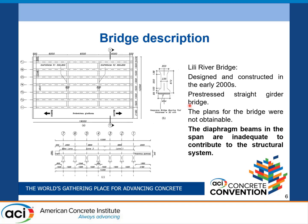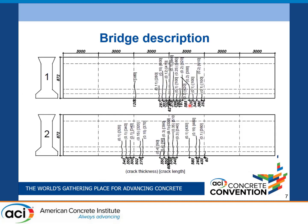Regarding the structure under study, this is a straight girder bridge with a 19-meter span, a 12.2-meter width, and no intermediate support. The bridge is named Lily River Bridge and was designed and constructed in the early 2000s. The plans for the bridge were not obtainable. As a major observation, the diaphragm beams in the span are inadequate to contribute to the structural system. A significant level of deterioration was evidenced in the beams after the load test instrumentation was placed. Therefore, a visual inspection was performed to determine the level of deterioration of the girders, acquiring the length, thickness, and location of the cracks in the beam surface.